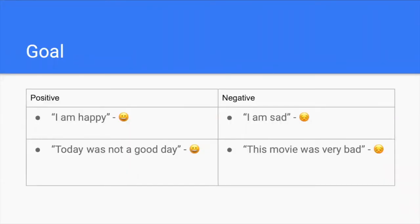Tweets can usually be put into two categories. Positive tweets are hopeful and confident and think of good aspects of a situation rather than the bad ones. On the other hand, negative tweets are seen as expressing or meaning refusal or denial.